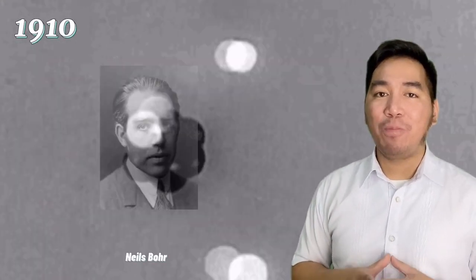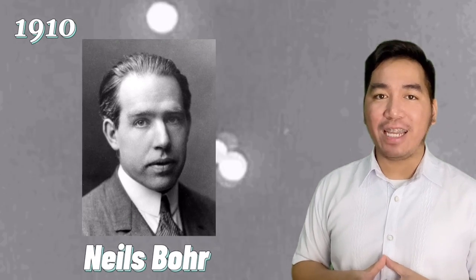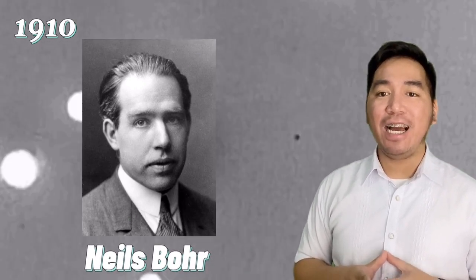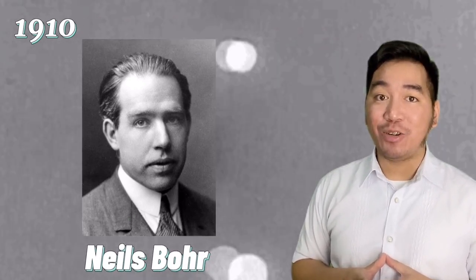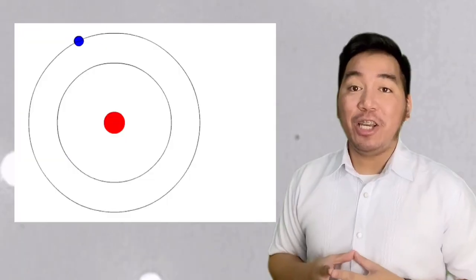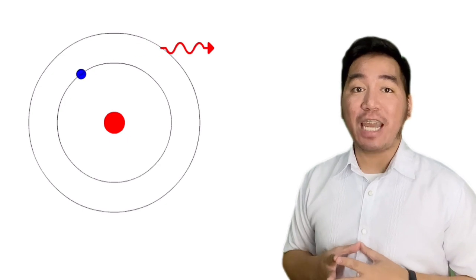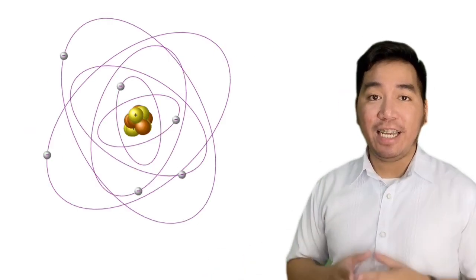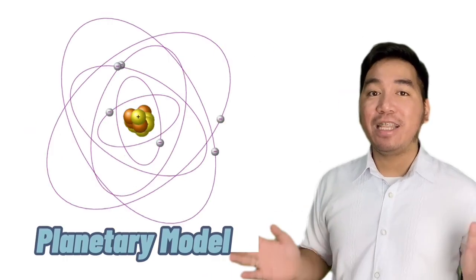Until Niels Bohr put an interest to refine Rutherford's idea by adding that electrons were in orbit, like planets orbiting the sun. Niels Bohr proposed a model of the atom in which the electron was able to occupy only certain orbits around the nucleus. This idea was later called the Niels Bohr Model or the Planetary Model.